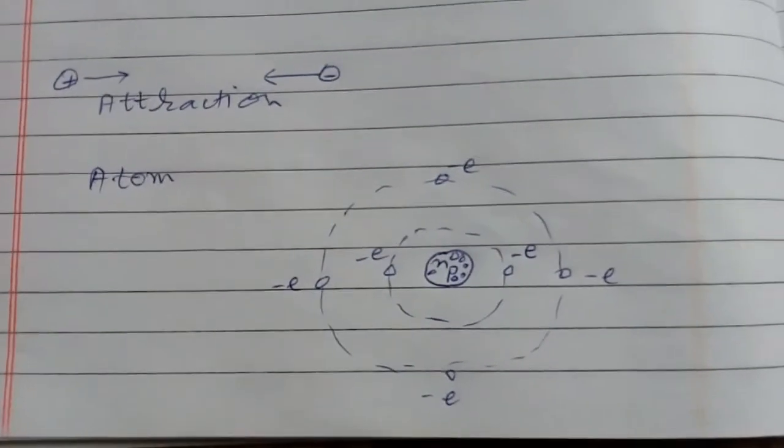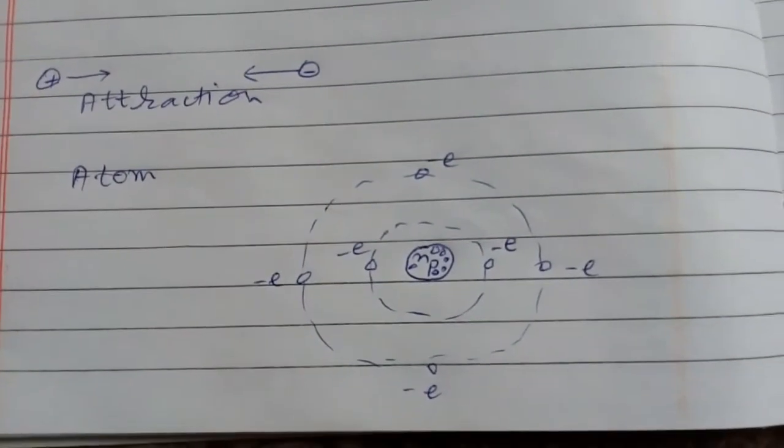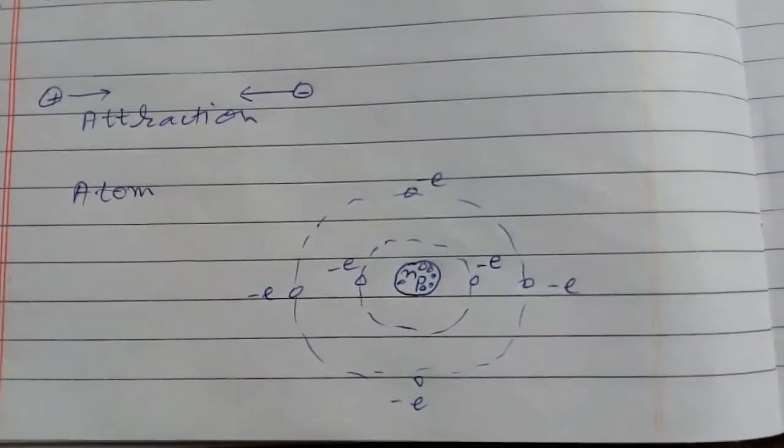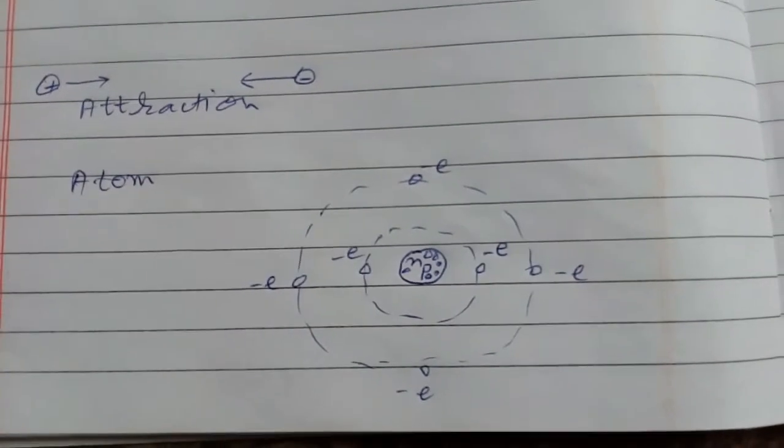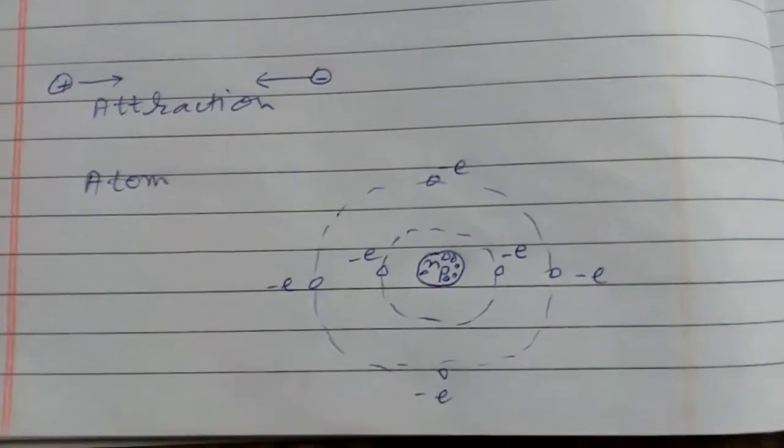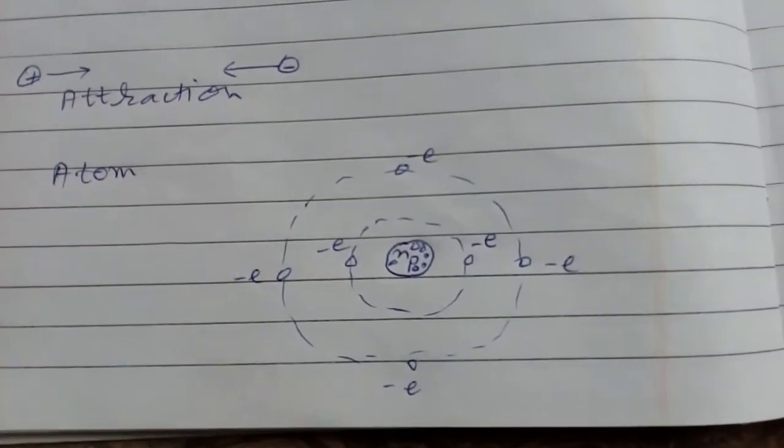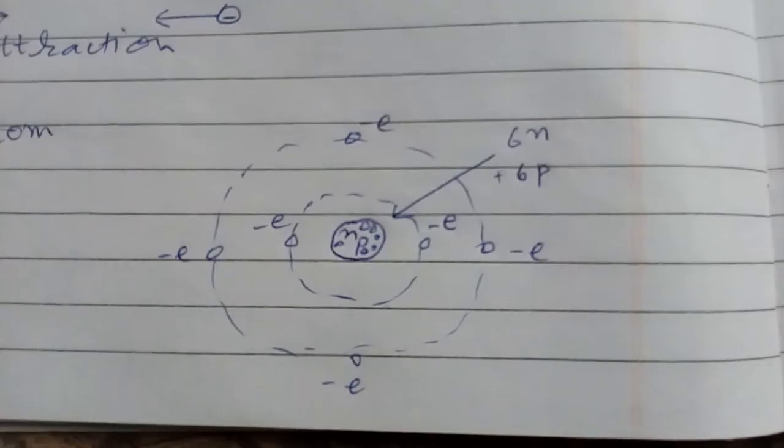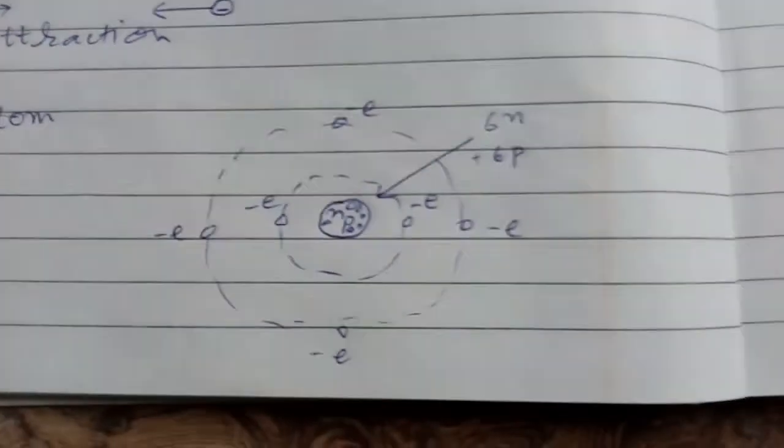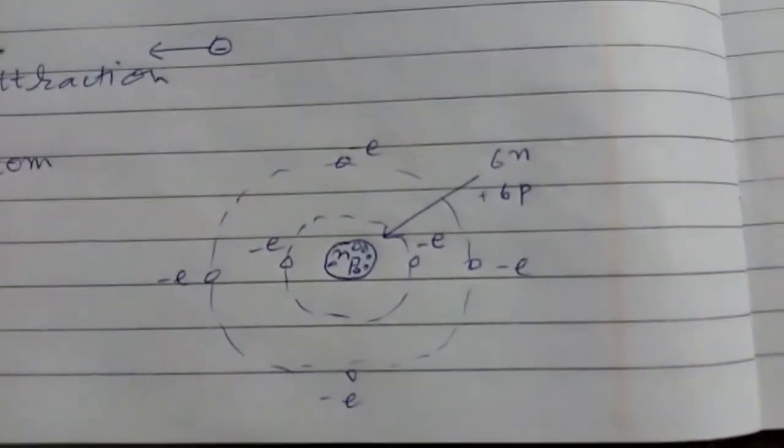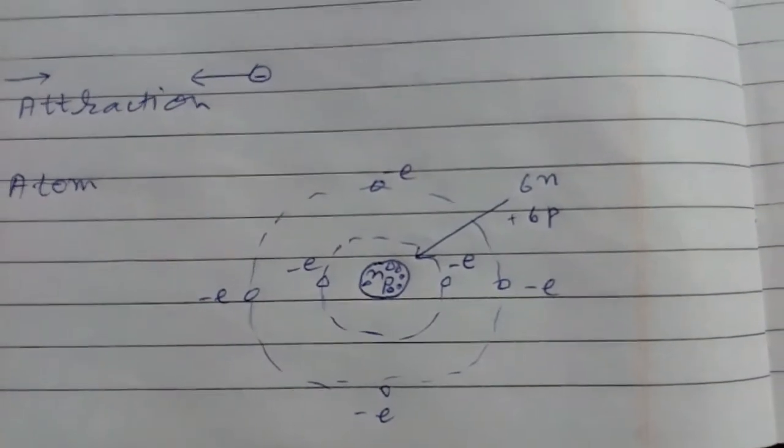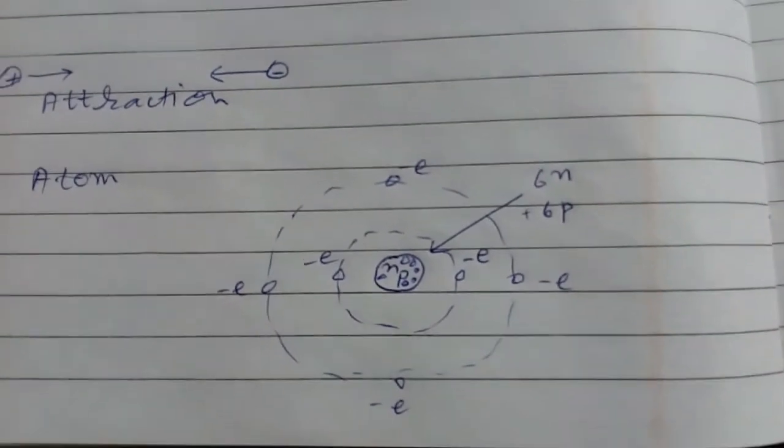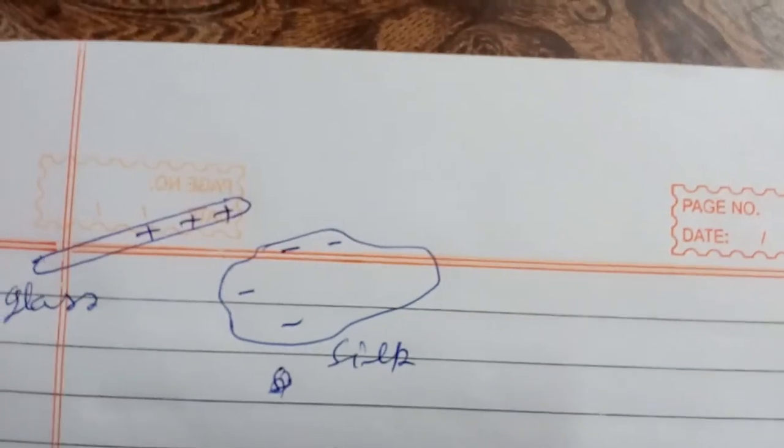And around the nucleus, negatively charged electrons revolve. The size of atom is nearly 10 to the power minus 10 meter. As you may see here, there are 6 electrons and 6 protons. It is neutral because charge of 6 negative electrons is balanced by charge of 6 positive protons. So net charge is 0, so the glass rod was initially neutral.